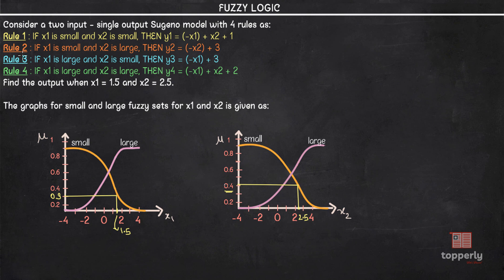Next, for Rule 2, which is if x1 is Small and x2 is Large: since we already found that x1 = 1.5 with Small gives a membership value of 0.3, that applies here too. For x2 = 2.5 with Large, we consider the large graph and extend 2.5 to get a membership value of 0.7.